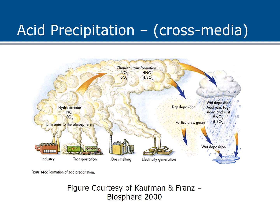Acid precipitation is a cross-media pollutant coming from a variety of sources — individual smokestacks, which are technically point sources, and transportation and cars, which contribute more non-point emissions. Emissions of hydrocarbons, nitrous oxides, and sulfur dioxide head into the atmosphere and are chemically transformed into nitric acid and sulfuric acid. These particles then undergo dry or wet deposition, and a somewhat acidic solution ends up in aquatic systems, where it can have a variety of different effects.